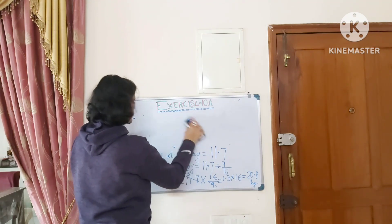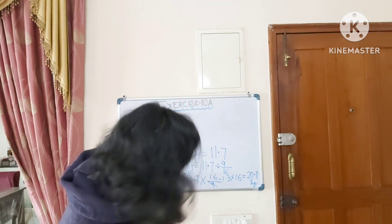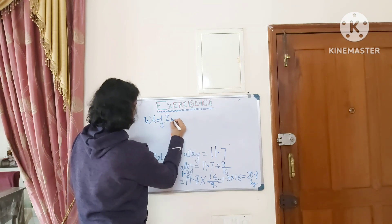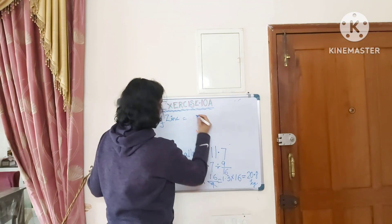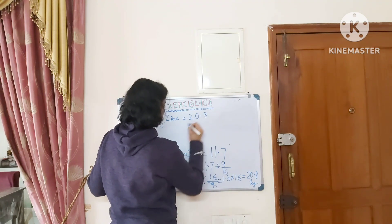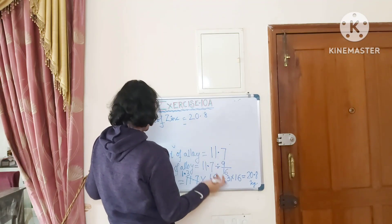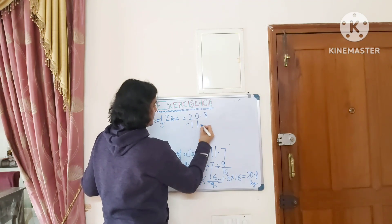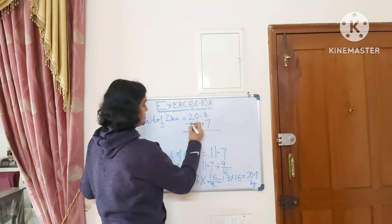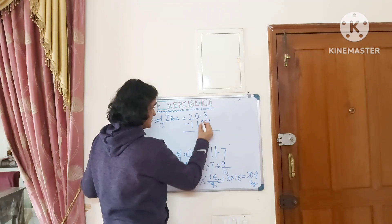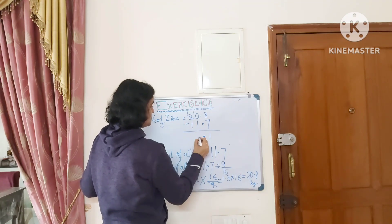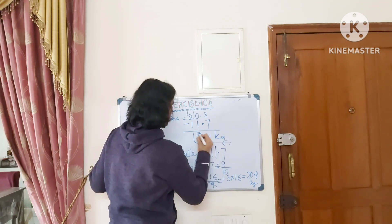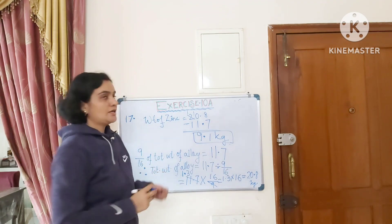Now we find the weight of zinc by subtraction: weight of zinc equals total weight minus weight of copper, which is 20.8 minus 11.7 equals 9.1 kg. The total weight of zinc in the alloy is 9.1 kg. End of question number 17.